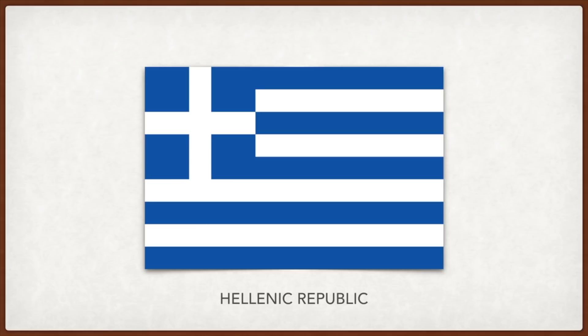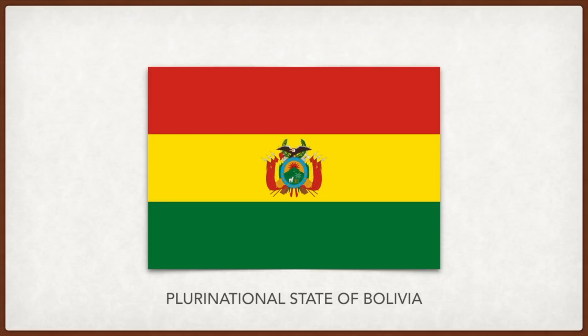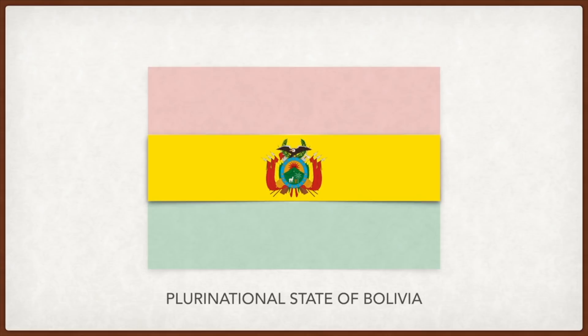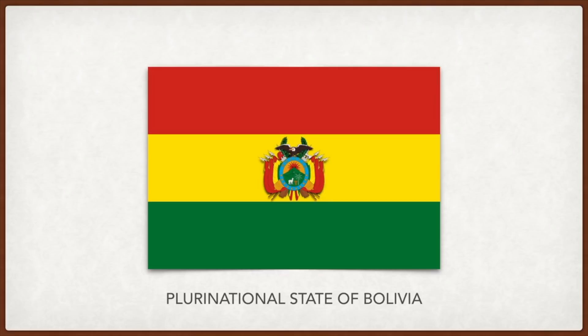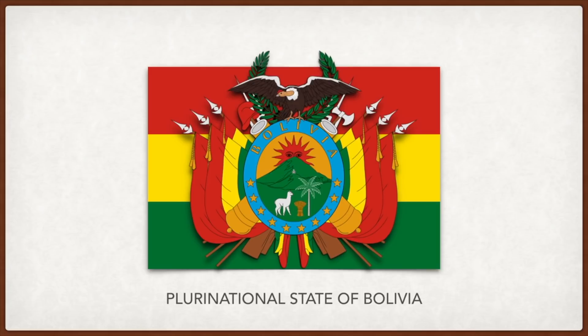Bolivia: red represents the bloodshed by Bolivia's heroes for the birth and preservation of the republic, yellow represents Bolivia's wealth and resources, and green represents the richness of natural areas as well as hope. The coat of arms depicts two crossed rifles symbolizing the struggle for independence, an axe and a red cap — a symbol of liberty and freedom — laurel branches as a symbol of peace, and a condor perched on top representing the people's willingness to defend the nation and its liberty.